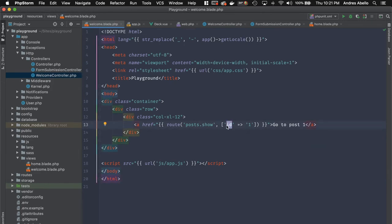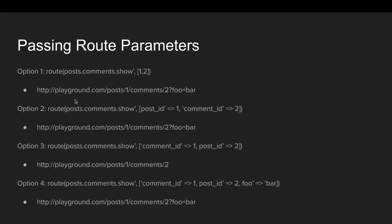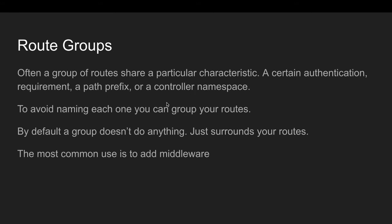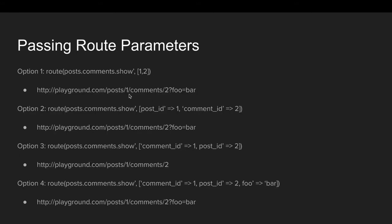The ID here is the parameter you're passing. There are four ways to pass parameters using named routes. For example, route('posts.comments') passing one and two — as an array with post ID 1 and comment ID 2 — gives you something like playground.com/posts/1/comments/2.